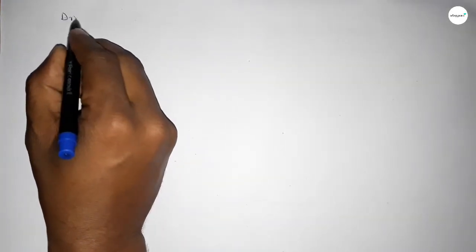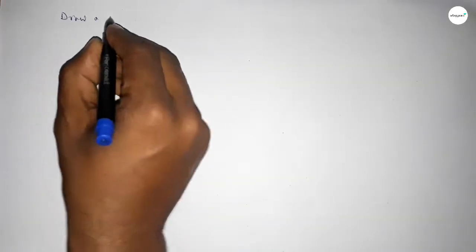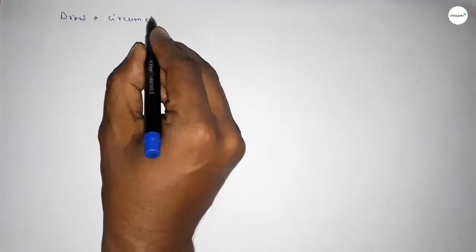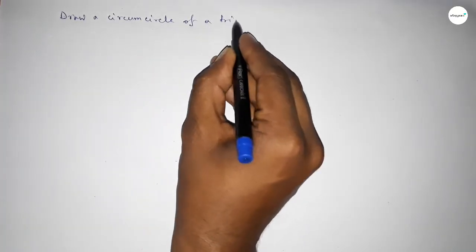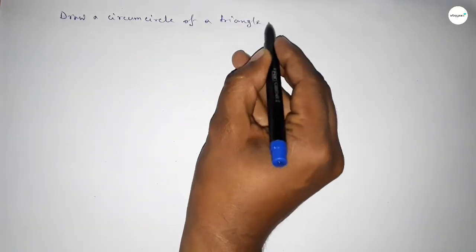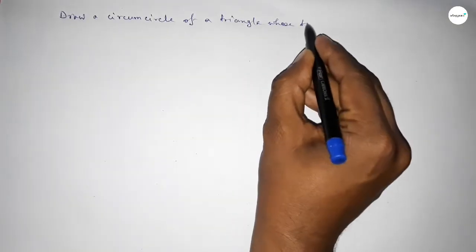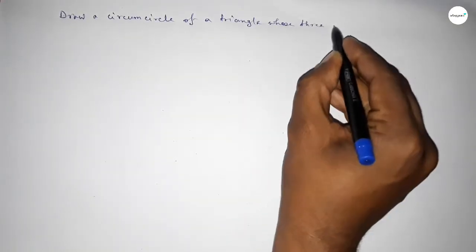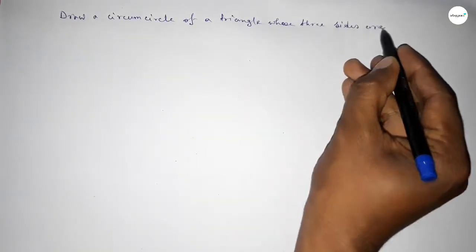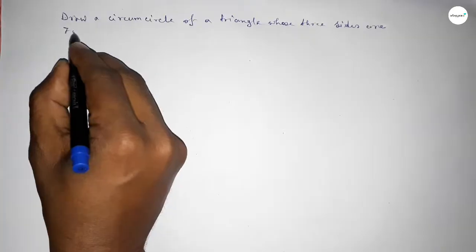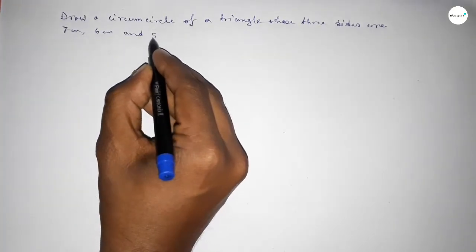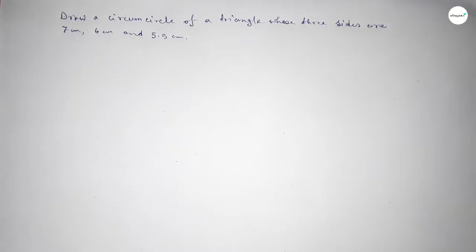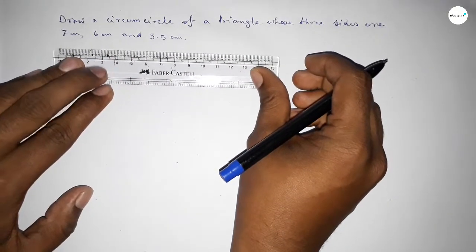Hi everyone, welcome to SISR Classes. Today in this video we have to draw a circumcircle of a triangle whose three sides are 7 centimeter, 6 centimeter, and 5.5 centimeter. So let's start the video.